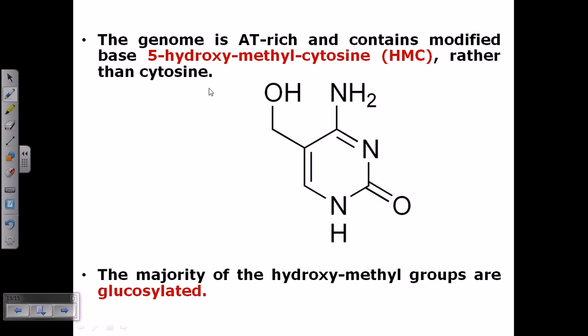The genome usually for this T4 phage is AT-rich in nature and usually contains modified bases like 5-hydroxymethylcytosine rather than cytosine. So here you can see this is a modified version of cytosine, it is methylated. After this methylation, it is getting 5-hydroxymethylcytosine, or 5-HMC. And also the majority of the hydroxymethyl groups are glucosylated in this case, as you can see. This is another important feature of the genome.